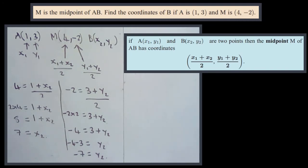So all of that tells us that point B is at (7,-7).